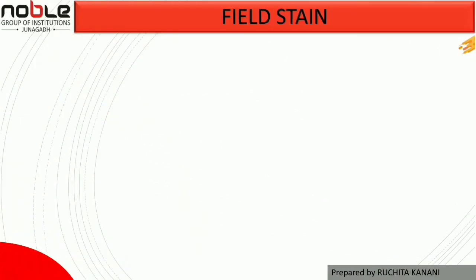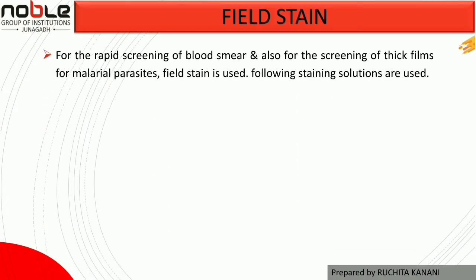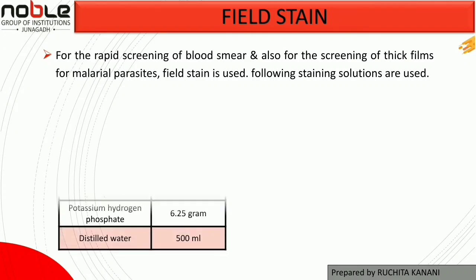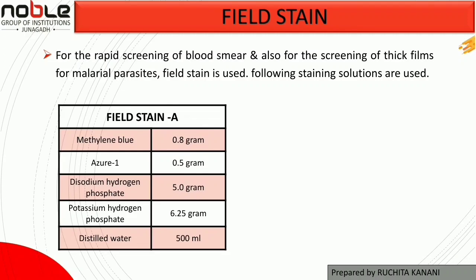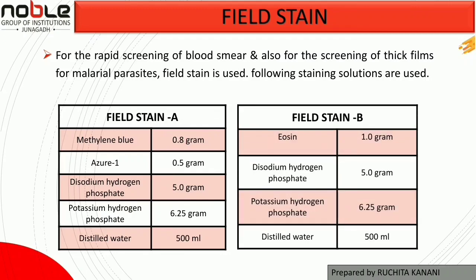Regarding Fieldstain composition: Fieldstain is used for rapid screening of blood smears and also for screening thick films for malaria parasites. Instead of Fieldstain, we can also use Leishman stain. Fieldstain is based on a methanolic mixture of methylene blue and eosin dye prepared in alcohol medium and diluted with buffer or distilled water during staining. Fieldstain A contains methylene blue, Azure 1, and disodium phosphate buffer solution. Fieldstain B uses disodium buffer solution without Azure 1; all other components are the same.